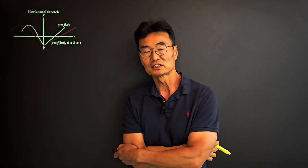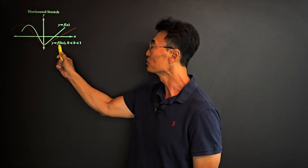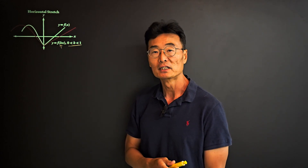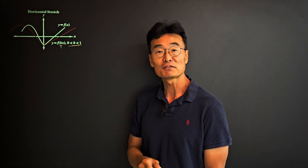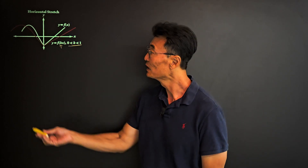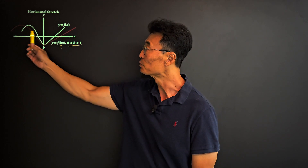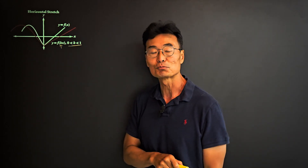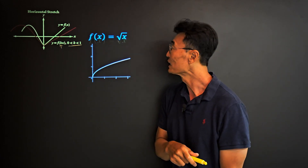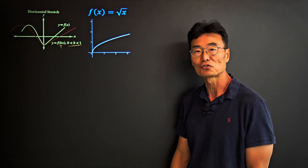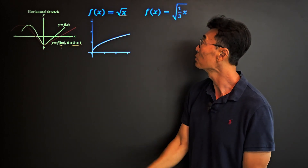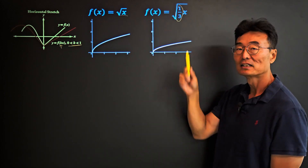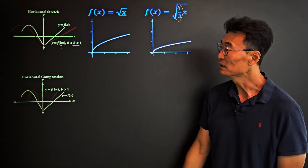For horizontal stretch, the value of x is multiplied by a number between 0 and 1. Note the contrast: for vertical stretch the constant in front was greater than 1, but for horizontal stretch it's between 0 and 1. The red graph is the original horizontally stretched. Using f(x) = √x, multiplying x by 1/3 — a fraction less than 1 — stretches the graph horizontally.